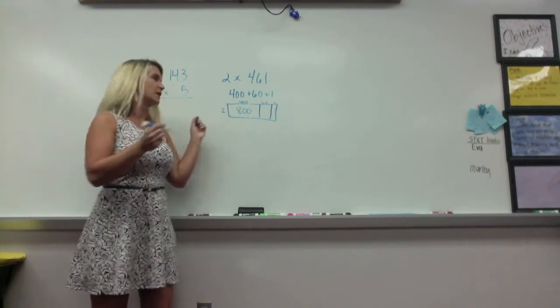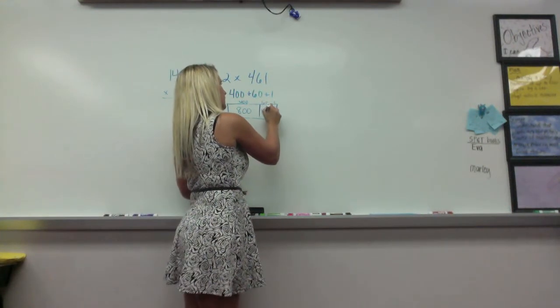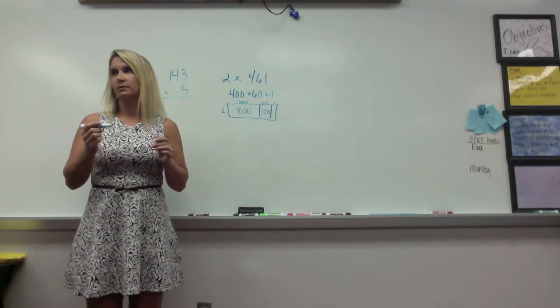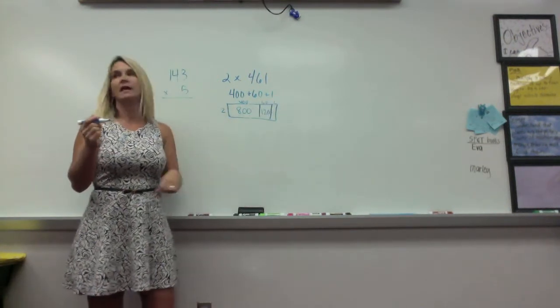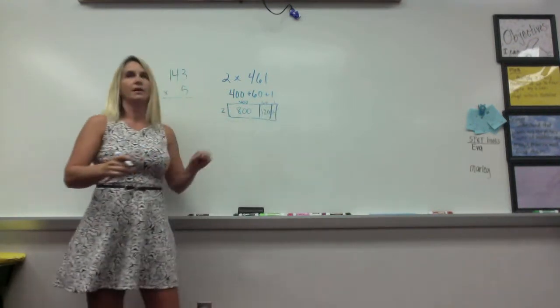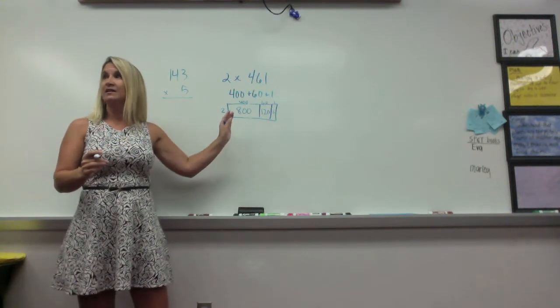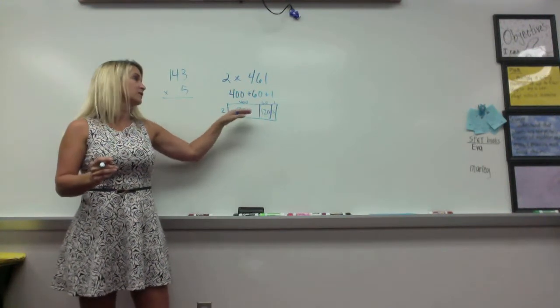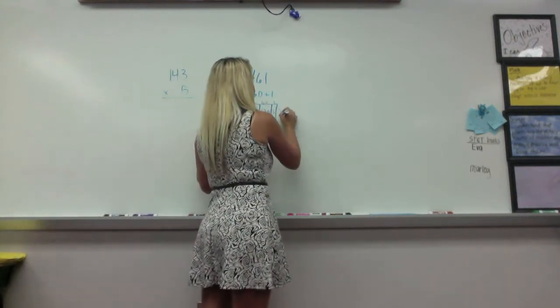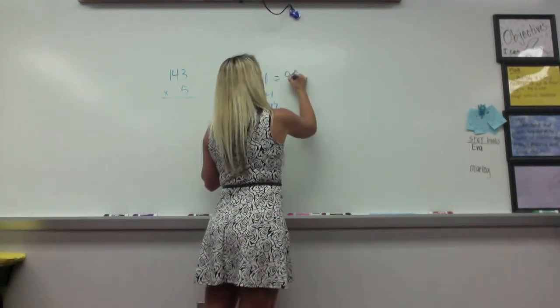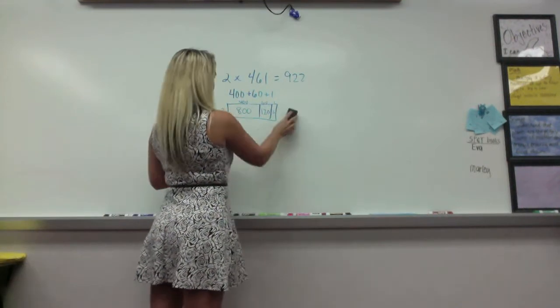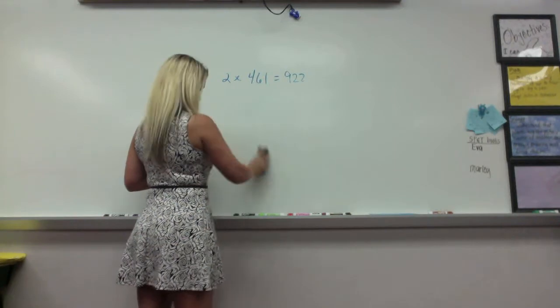The second box will be what? One hundred and twenty. One hundred and twenty. Who would like to tell me how you got that? Raise your hand. How'd you get that, Miranda? Okay. So, one hundred and twenty. And then the last one should be what, class? Two. Two. Because we're doing one times two. And then if you add all these up, again, where we're at right now, this is a little easy to add up in your head. What did you guys get when you added this up? Go ahead, tell me. Nine hundred and twenty-two. Nine hundred and twenty-two.